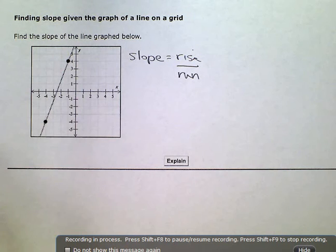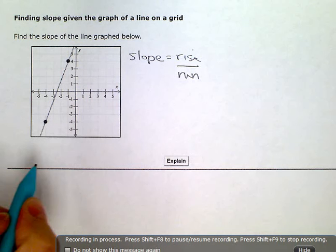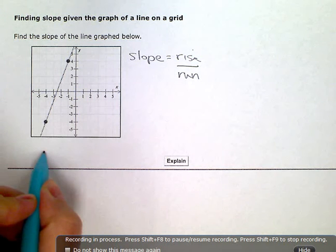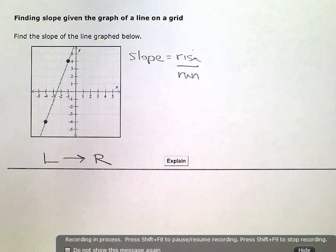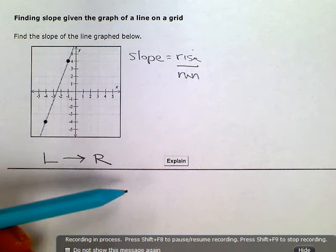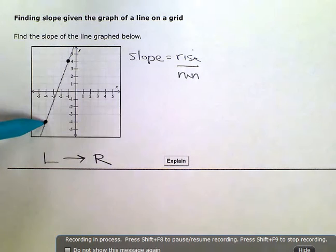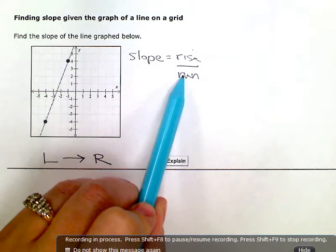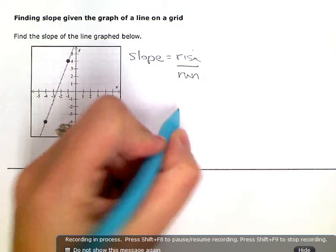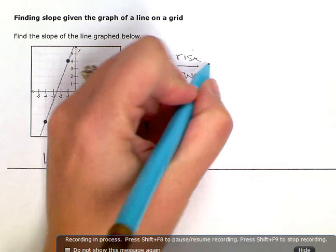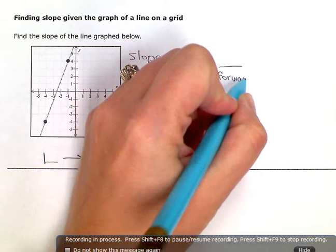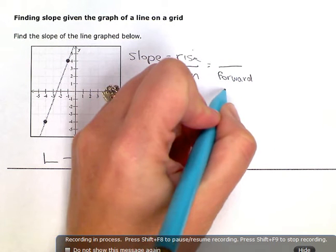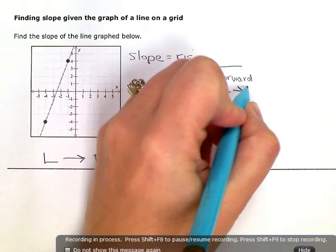The important thing to remember is that when we're calculating slope, we're always reading the graph left to right, going forward. So as far as the run goes, you are always going to be going forward or left to right.